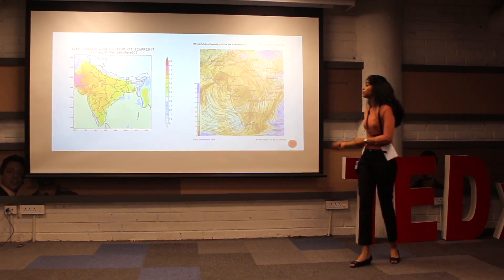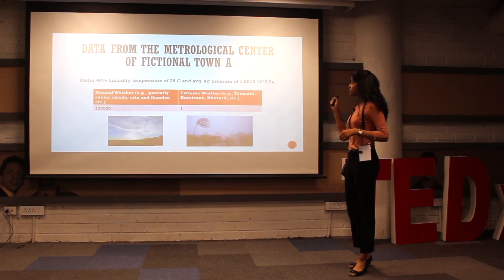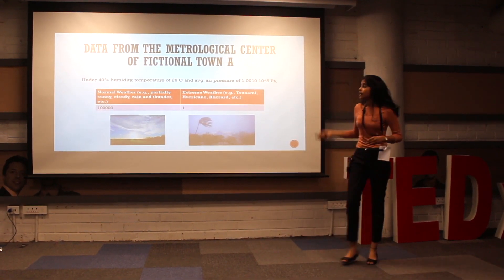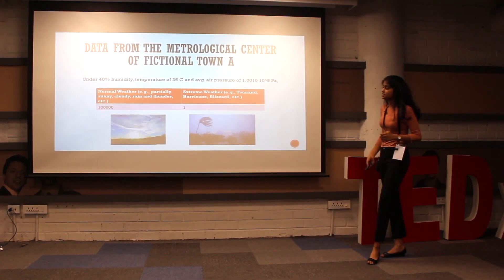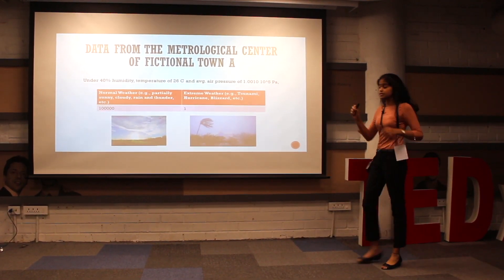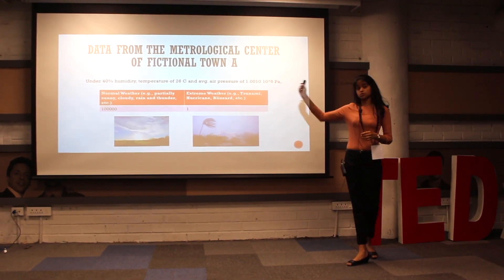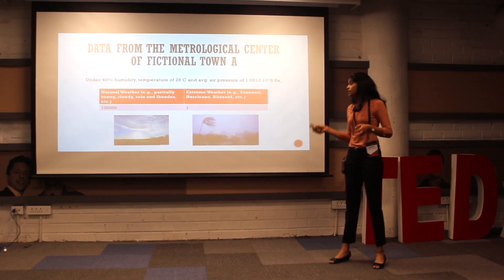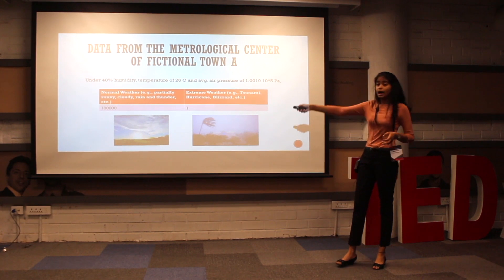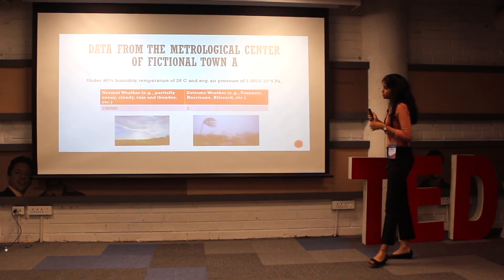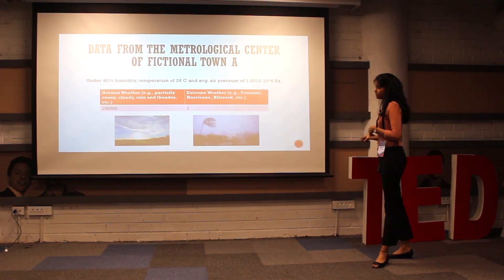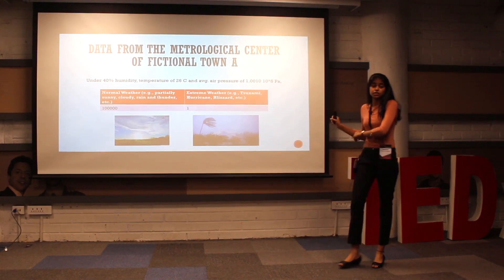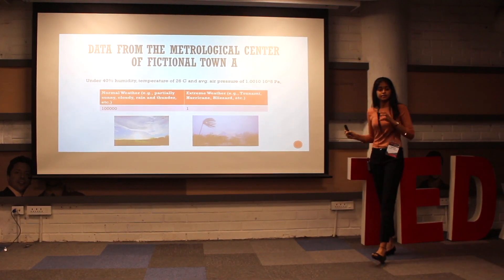Let's take, for example, the data collected from the meteorological center of fictional town A. We can see that under a given set of common conditions, the number of times normal weather — such as sunny, cloudy, or rainy days — is a high number when compared to the number of times extreme weather has occurred. In fact, we can say that the number of times extreme weather has occurred is quite insignificant.